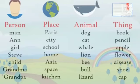Place includes: Paris, city, school, home, Asia, space, kitchen. All these are names of places.